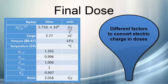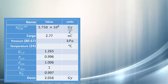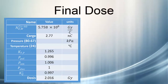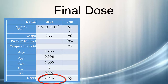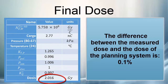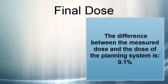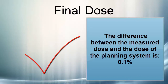On the table we see all the values, we make the calculation, and we get a dose of 2.016 grays. If we compare it with the planned dose, which was 2.014 grays, we have a difference of 0.1%.